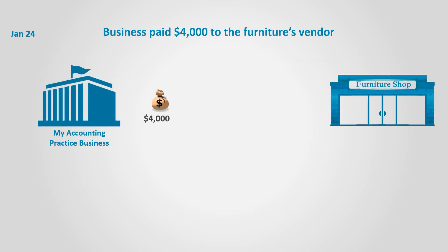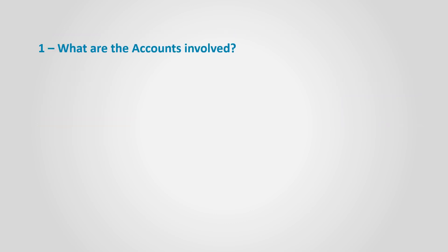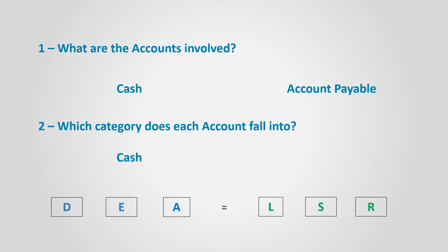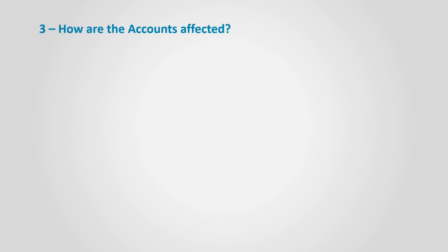On January 24th, the business paid $4,000 to the furniture vendor. To analyze the transaction, we ask ourselves the usual five questions. What are the accounts involved? Since the business paid cash, the cash account is involved. It paid cash to the furniture vendor, who is a liability — specifically an accounts payable — so the accounts payable account is involved. Which category does each account fall into? Cash falls in the assets category and accounts payable falls in the liabilities category. How are the accounts affected? Cash decreased since the business paid cash, and accounts payable decreased as well since the business now owes the vendor less.